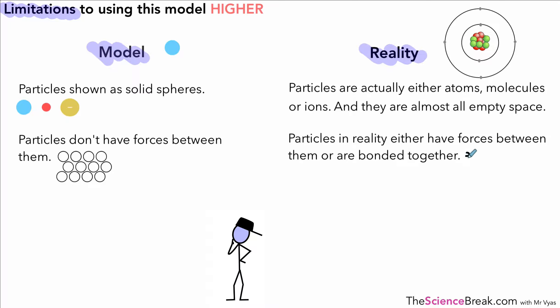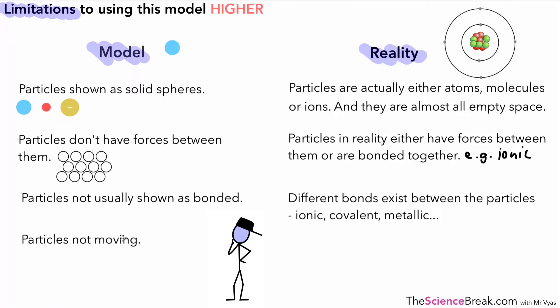One example we could talk about is our ionic bond, which we looked at in great detail in previous videos. In our model, the particles are not usually shown as bonded, but as we said, we have different kinds of bonds that happen between particles: ionic, covalent, and metallic.